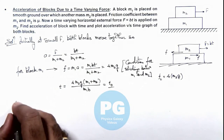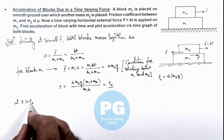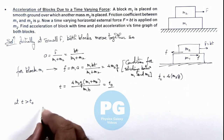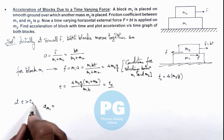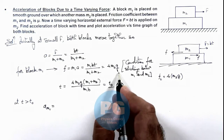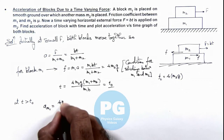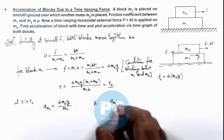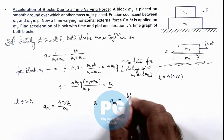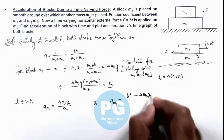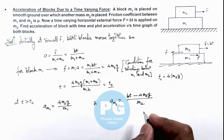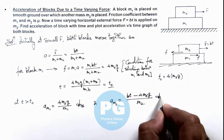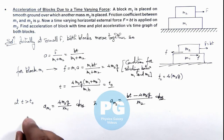For t greater than t0, the two blocks get separated and friction takes its limiting value mu × m2 × g. The acceleration of block m1 is constant, since the only force acting on it is the constant friction mu × m2 × g. So acceleration of m1 = mu × m2 × g / m1, a constant. The acceleration of m2 is: (F − friction) / m2 = (bt − mu × m2 × g) / m2, which increases linearly with time.